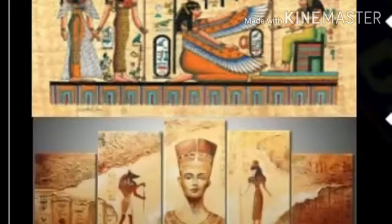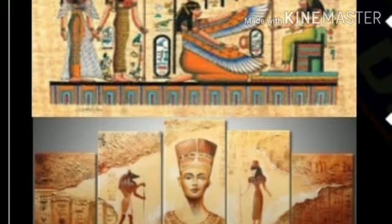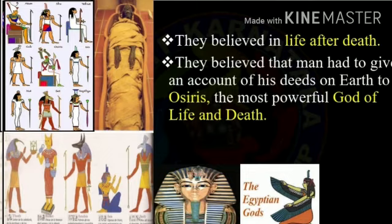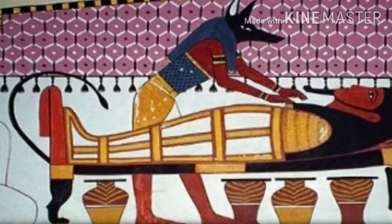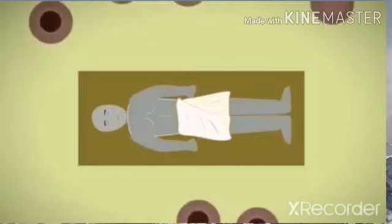The prosperous, wealthy Egyptian peasants and citizens during their leisure engaged themselves in the creation of artistic works. The role of priest was created to interpret nature and explain it. The priests were scholars and shouldered the responsibility of protecting written documents. They believed in life after death and that a man had to give an account of his deeds on earth to Osiris, the most powerful god of life and death. The priests considered that life on earth was temporary and was needed only to prepare for the next life, and thus the whole of the Nile Valley was preserved for the dead.